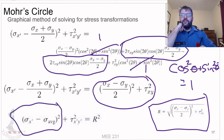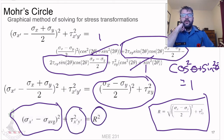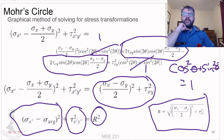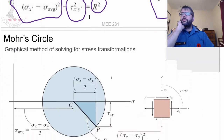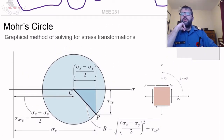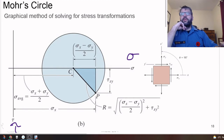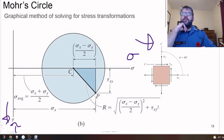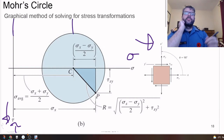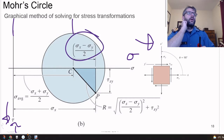That equation — (σ_x_prime − σ_avg)² + τ²_x_prime_y_prime = R² — is the formula for a circle. So if we plot this with normal stress sigma on the horizontal axis increasing to the right, and shear stress tau on the vertical axis increasing downward, we get a circle. The center of that circle is located at sigma average on the horizontal axis, and the radius R equals the square root of the known original stress terms.